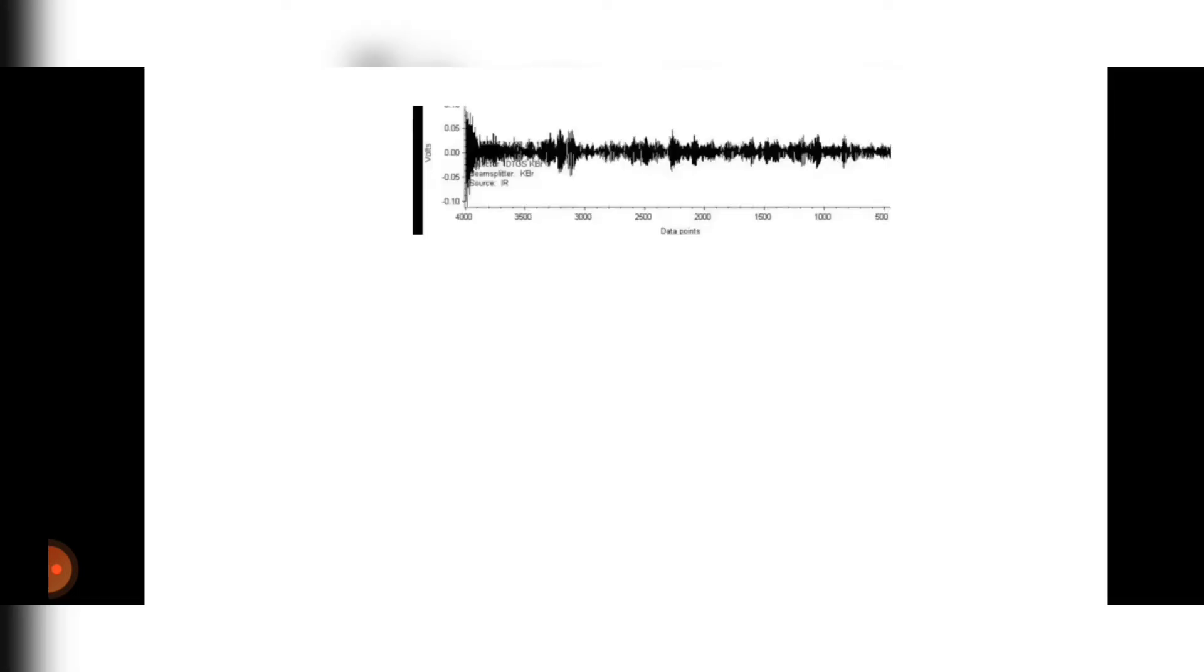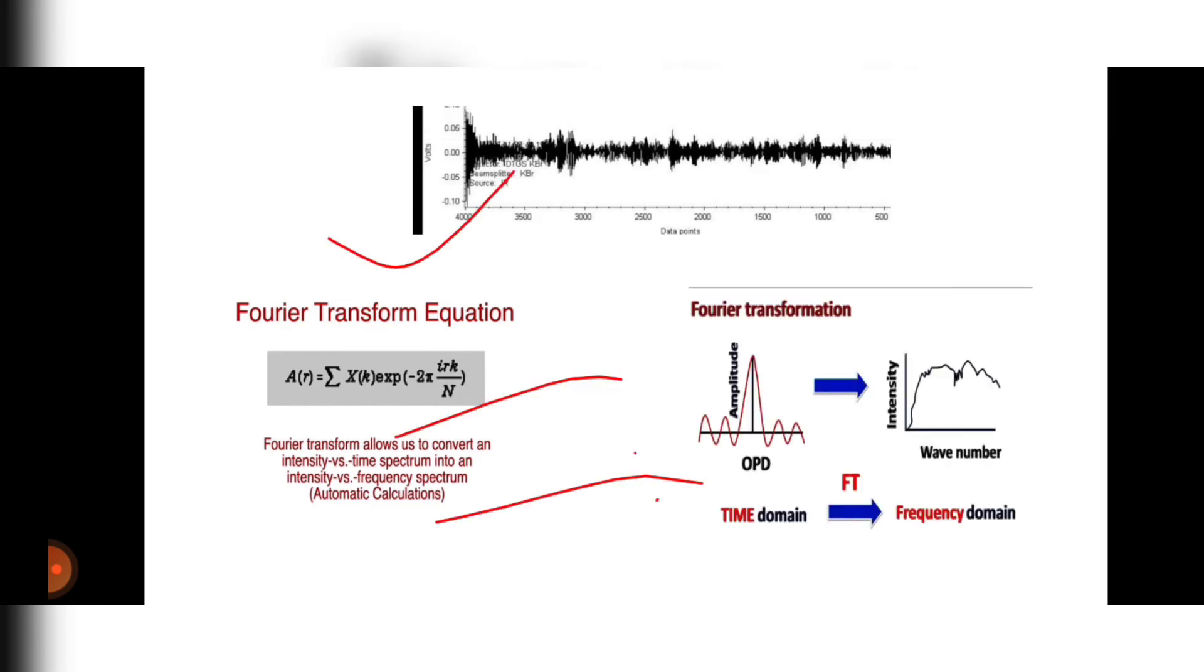Constructive and destructive interference commonly give these types of spectrum. Using the Fourier transform equation, we will convert these types of graphs to intensity versus frequency. From time domain, using this equation, we will get a normal graph of intensity versus wave number in frequency domain. Like this, we will determine different types of functional groups.